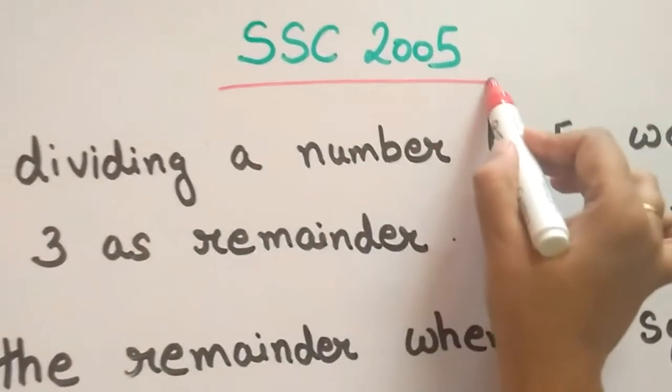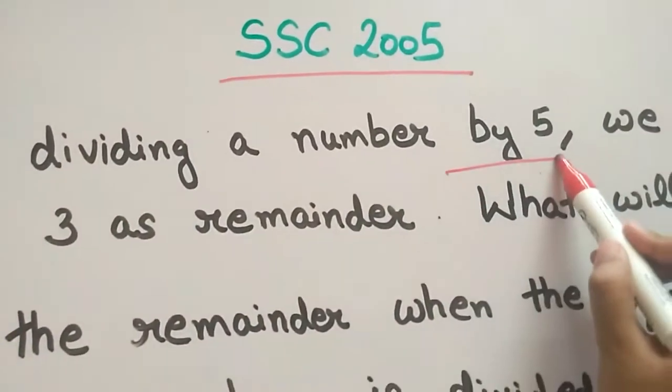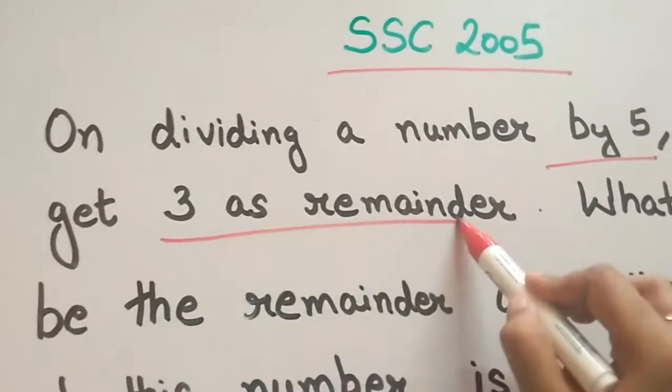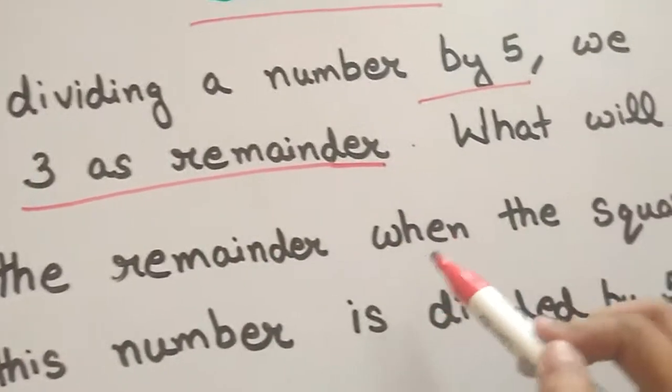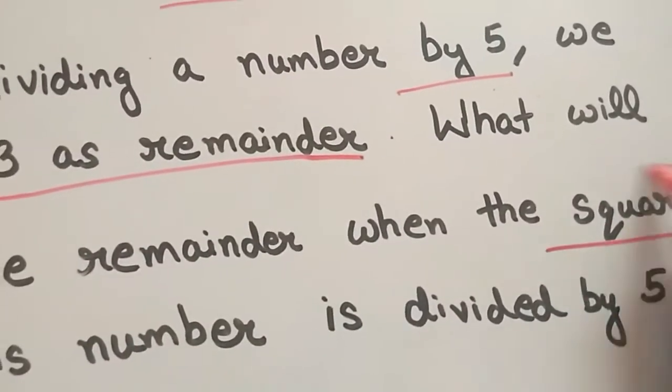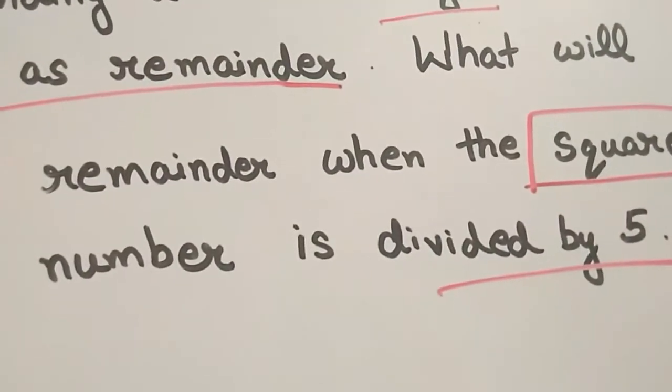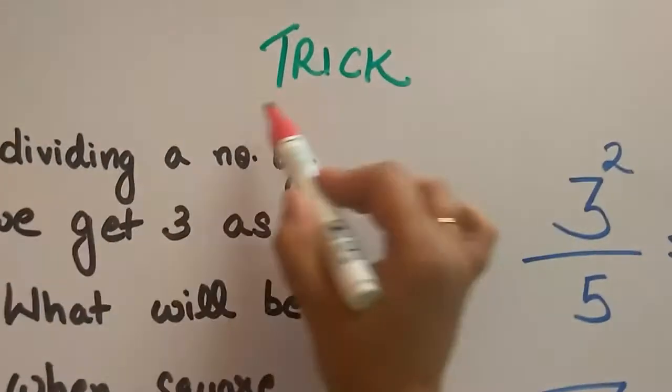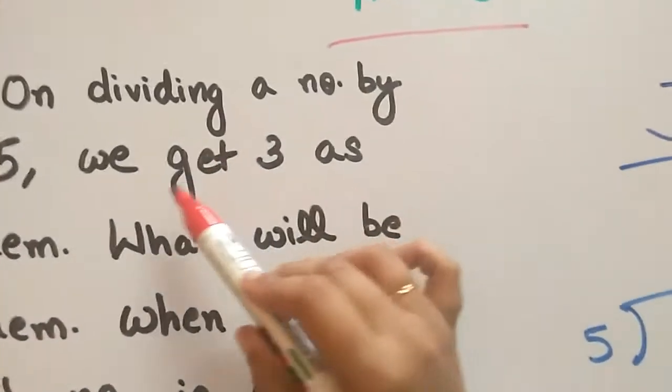SSC 2005 question: on dividing a number by 5, we get 3 as remainder. What will be the remainder when the square of the number is divided by 5? The trick to solve such questions is, according to our question on...